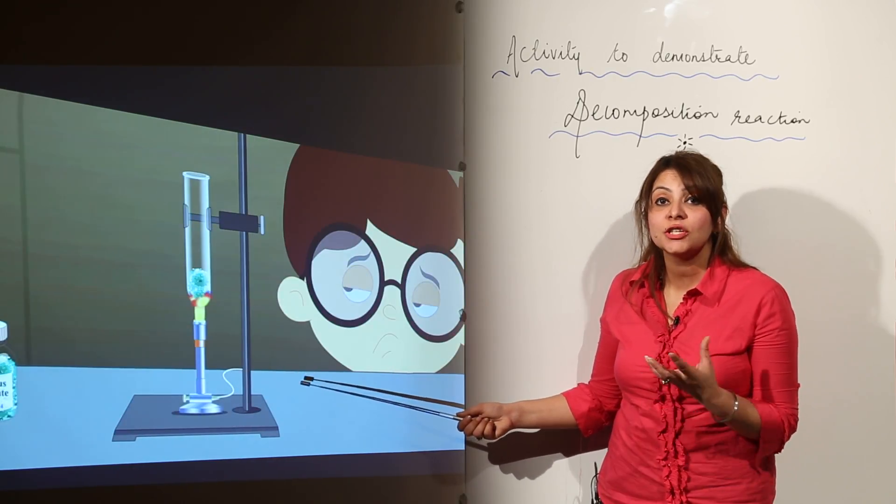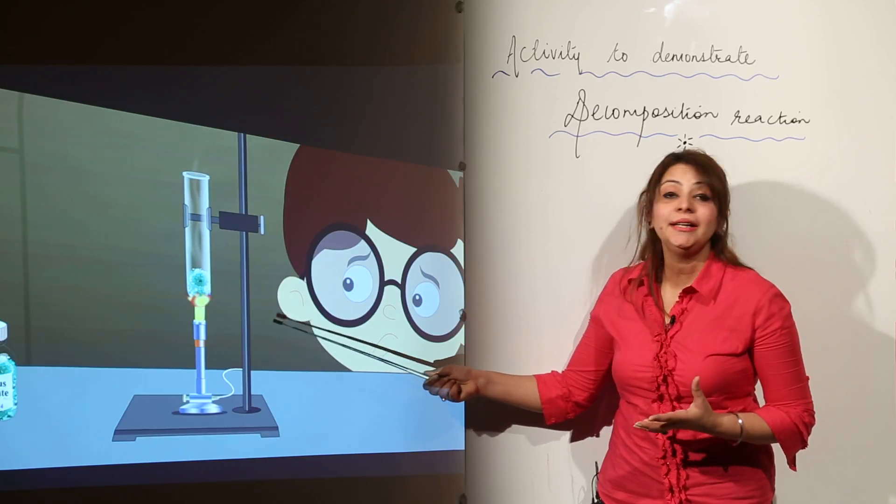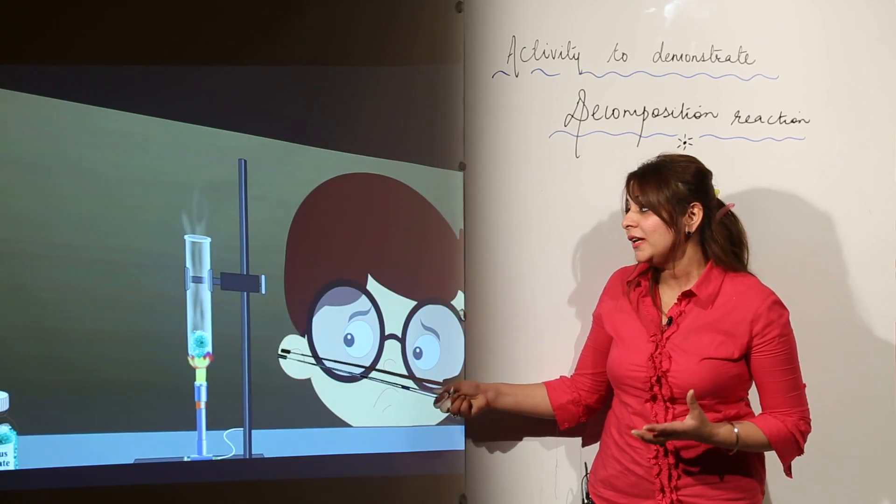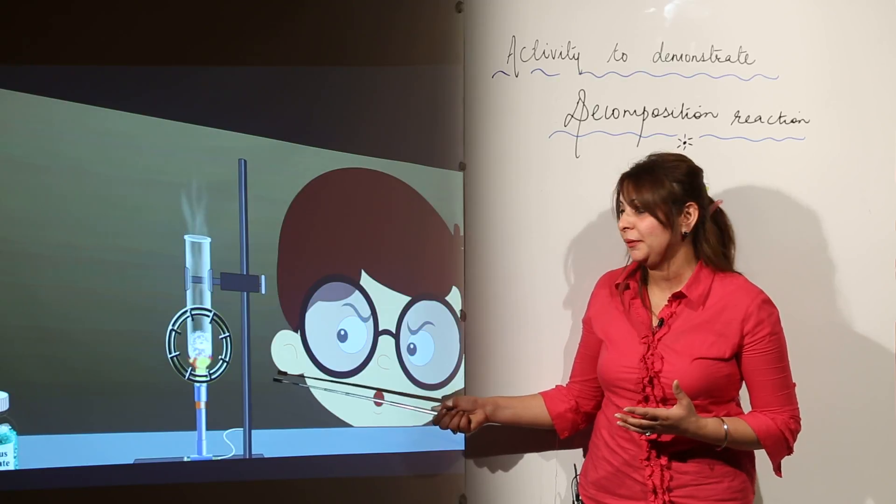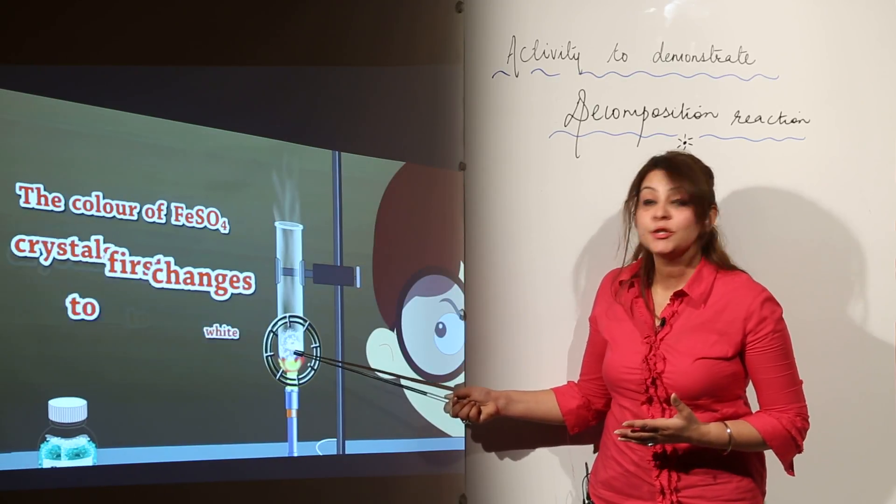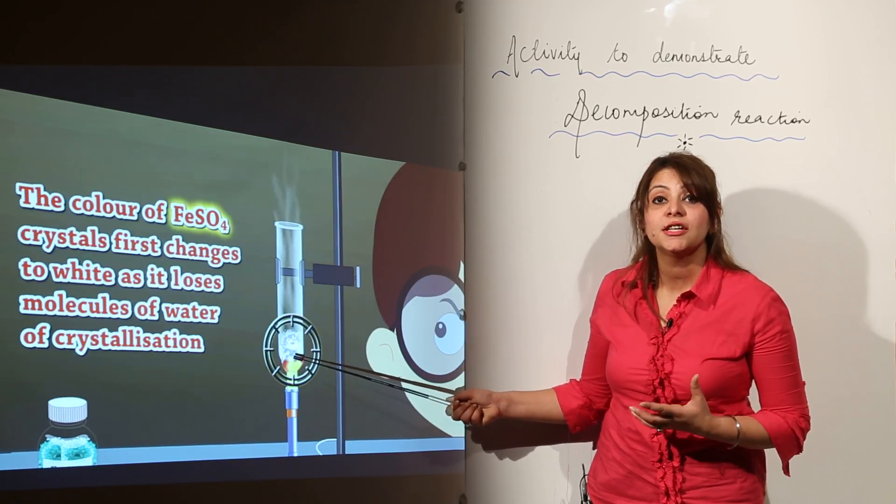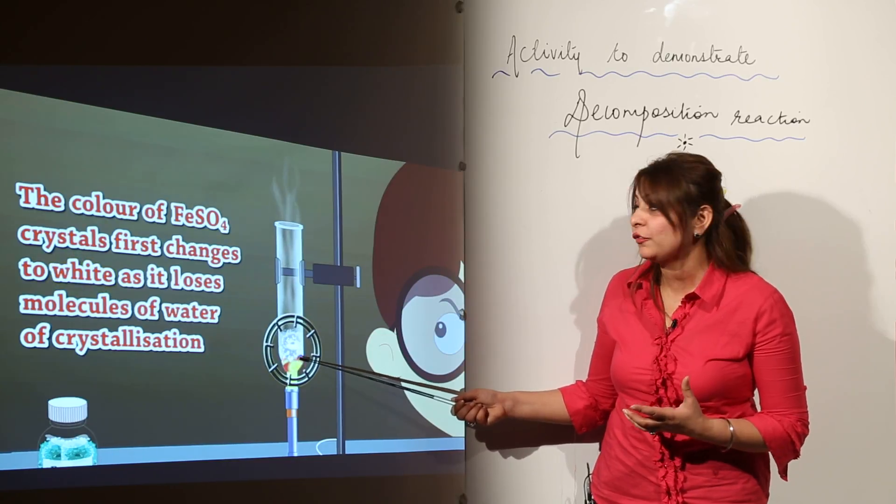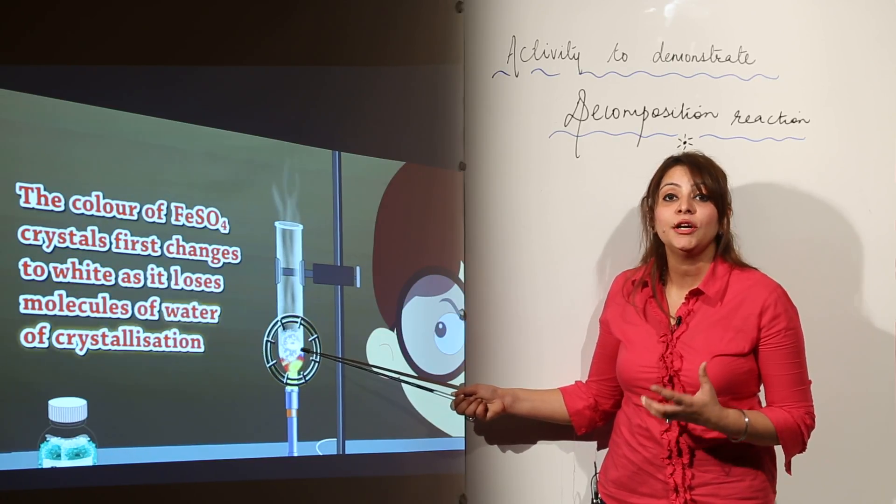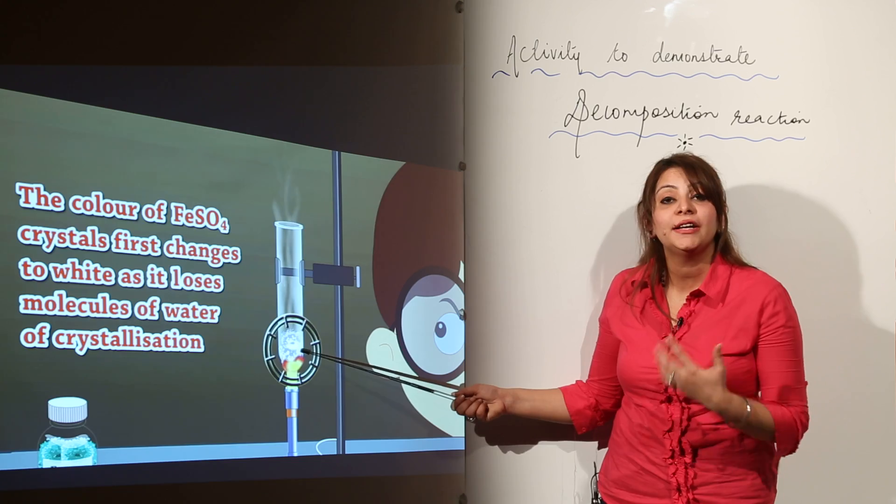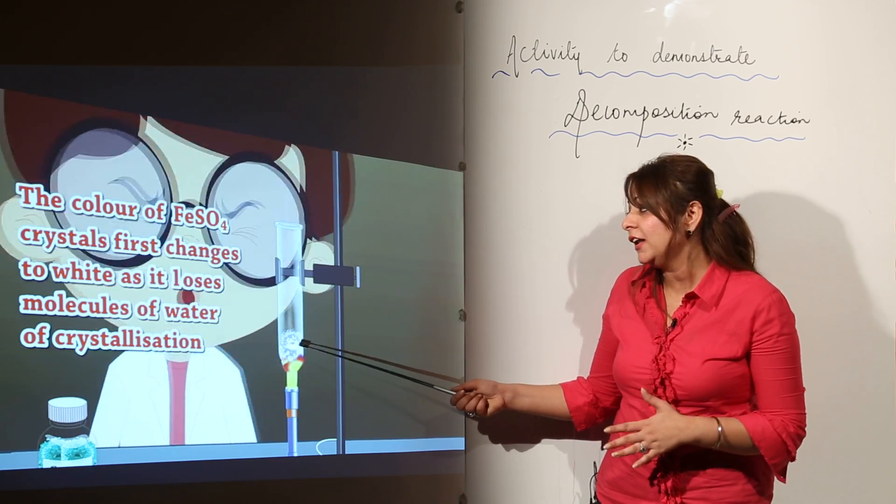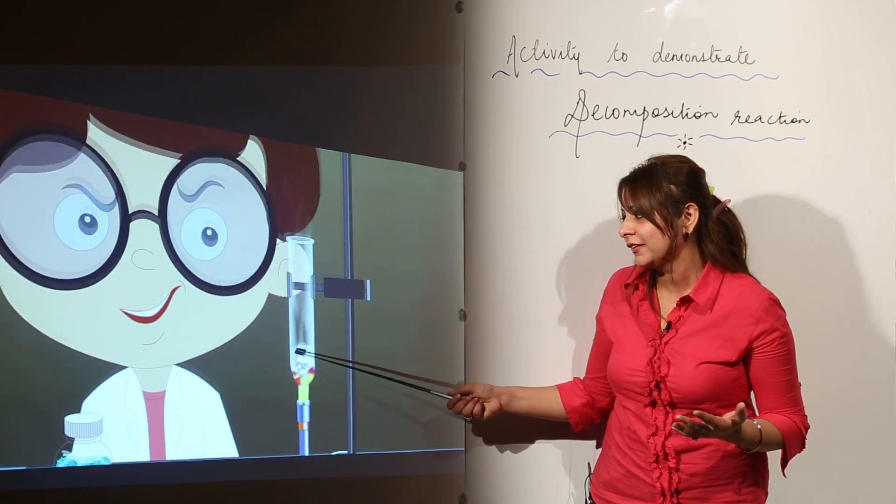We are going to observe what is happening. You can see that it turns white. The green color turns white because it loses water of crystallization, that means the water which was present with the FeSO4 has been lost and its green color changes to white.